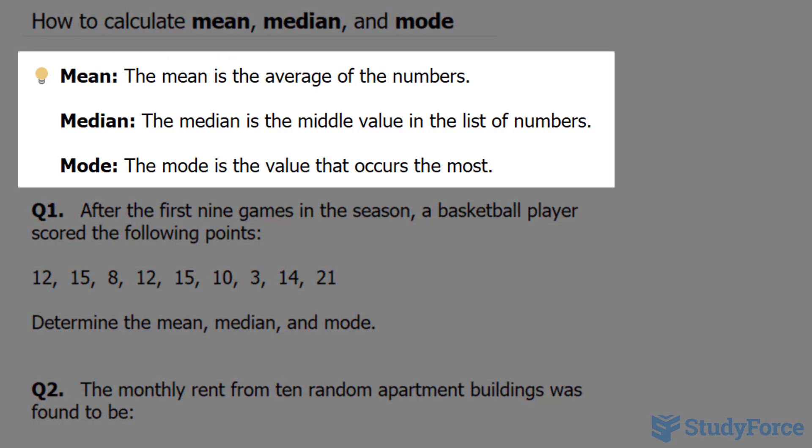I want to start off with three quick definitions. Mean is the average of the numbers, median is the number that's in the middle of the data set, and mode is the number that is most repeating.